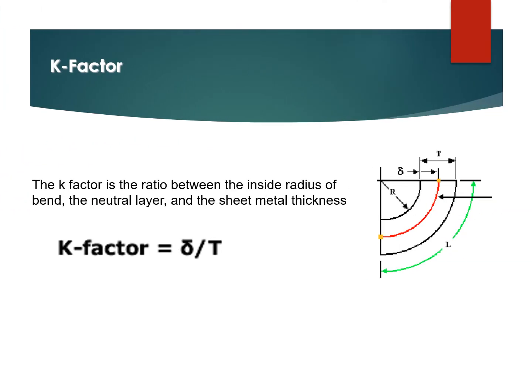The K factor is the ratio between the inside radius of the bend with respect to the neutral layer. The neutral layer is shown in red, and T is the sheet metal thickness. So the K factor equals delta — the radius to the neutral layer — divided by T, the thickness.